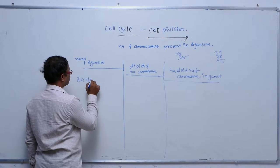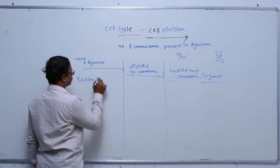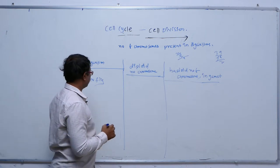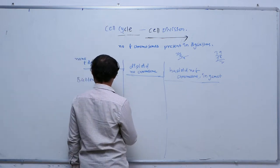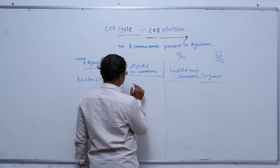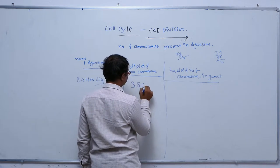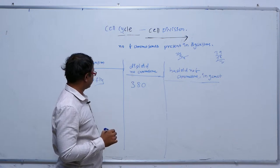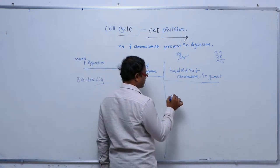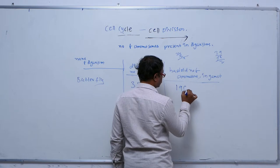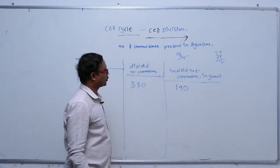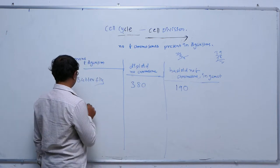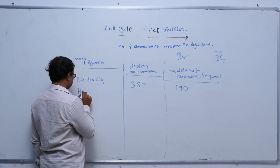In butterfly, the diploid number of chromosomes is 380, which means it has 190 pairs. The haploid number of chromosomes in the gamete is 190.